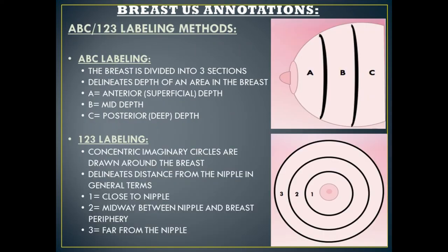The last method of breast ultrasound annotation is an antiquated method known as the ABC or the 1-2-3 labeling methods. This method is not really used in practice today, but it's important to know in case you come across it. For the ABC method, the breast is divided into three sections, which delineates the depth of an area in the breast.